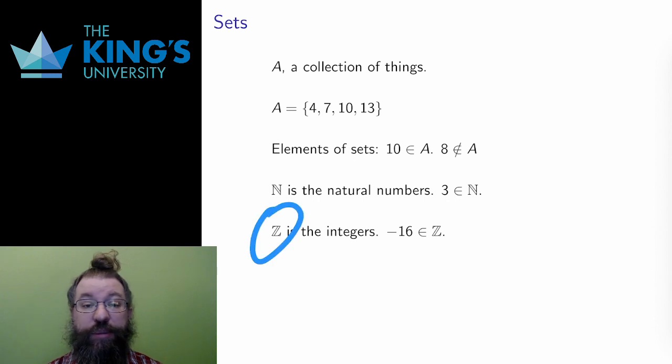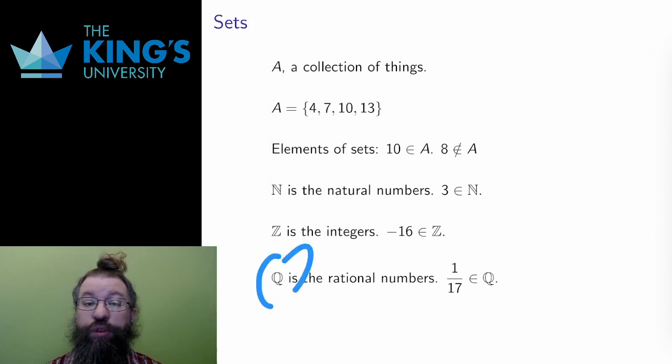This stylized Z is the symbol for the integers, positive and negative whole numbers. Now I can include negatives, so negative 16 is an element of the integers. This stylized Q is the rational numbers, the fractions. 1 over 17 is an element of Q.